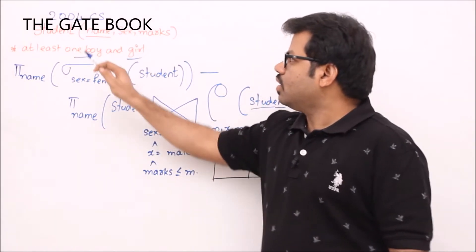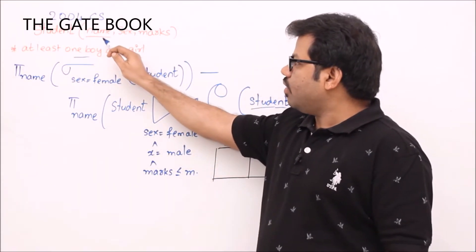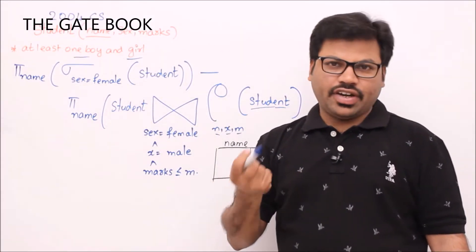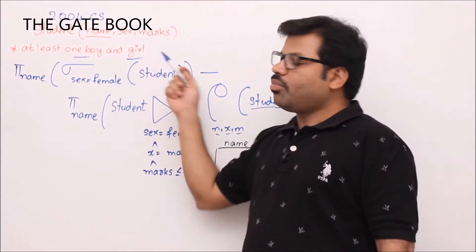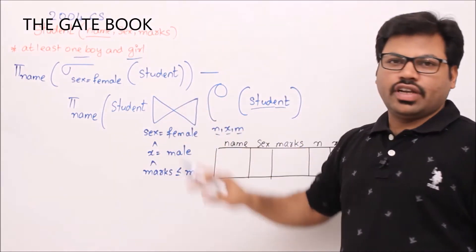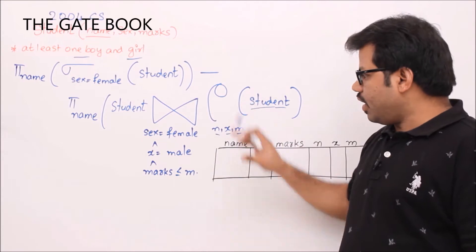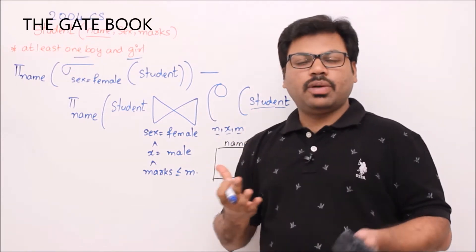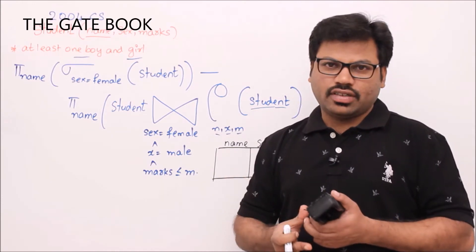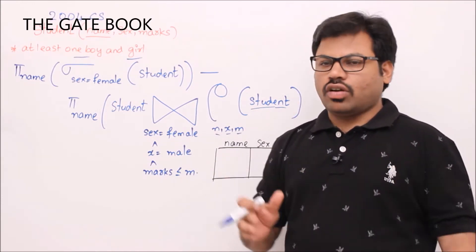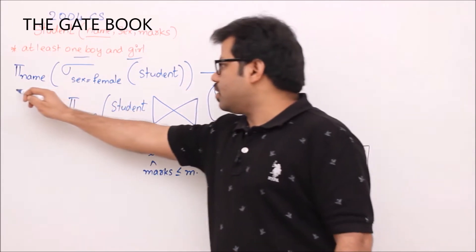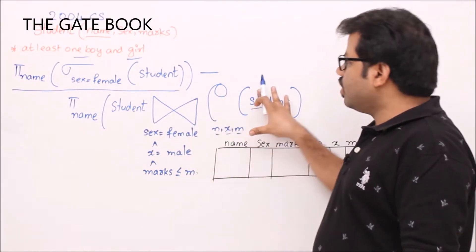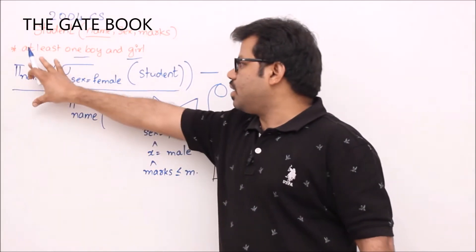This is a GATE 2004 CS question. A student table is given with name, sex, and marks, where name is the primary key — meaning every student should have a different name. There is at least one boy and one girl in the table. The query given is lengthy, so the suggestion is to divide it into multiple pieces and apply a divide-and-conquer method.